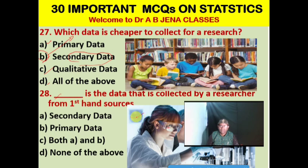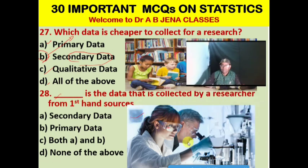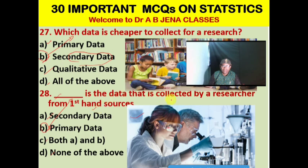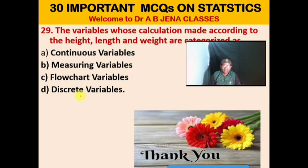Next MCQ: Dash is the data that is collected by a researcher from first-hand sources. A. Secondary data. B. Primary data. C. Both A and B. D. None of the above. B is the right option. Primary data is the data that is collected by a researcher from first-hand sources.